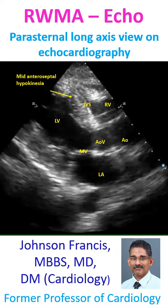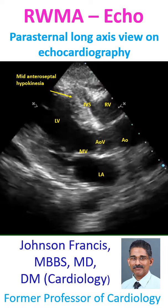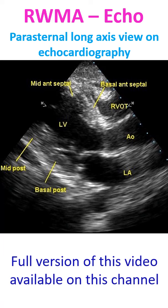Regional wall motion abnormality in the form of mid-inferoseptal hypokinesia is also seen. Myocardial segments seen on parasternal long axis view are basal posterior, mid-posterior, basal inferoseptal, and mid-inferoseptal.